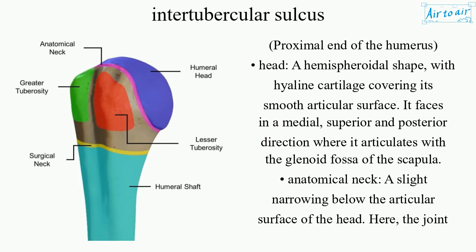Proximal end of the humerus — head. A hemispheroidal shape with hyaline cartilage covering its smooth articular surface. It faces in a medial, superior, and posterior direction, where it articulates with the glenoid fossa of the scapula.